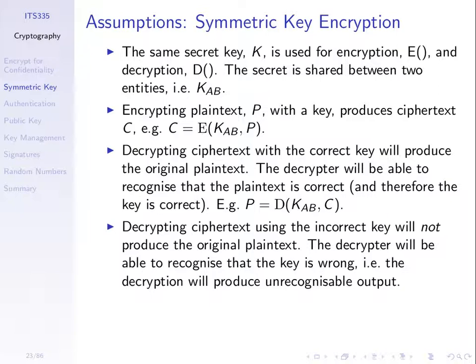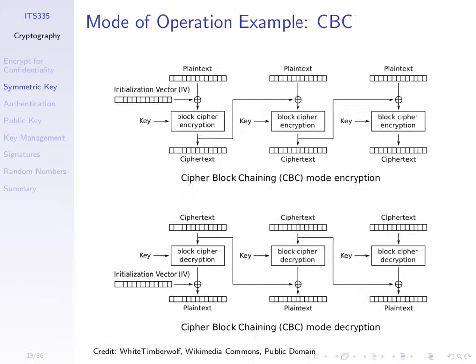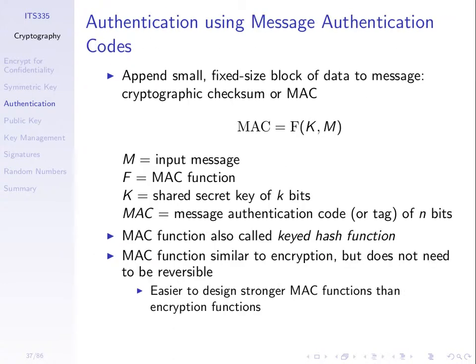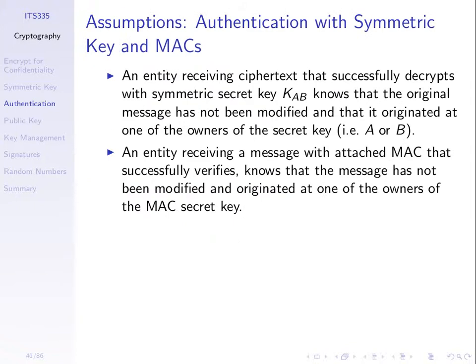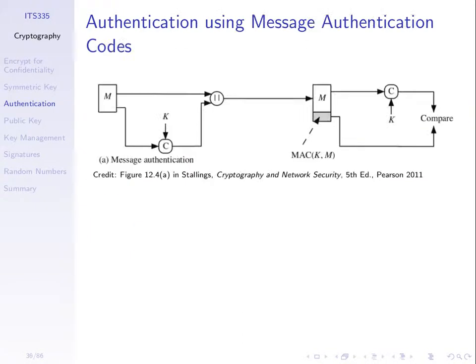One of these assumptions is stated here: decrypting with the wrong key will not produce the original plaintext, and the decryptor will be able to recognise that that key is wrong. It's captured in these assumptions — if we receive ciphertext that successfully decrypts, then we know it has not been modified. If it doesn't successfully decrypt, we assume it is the wrong key or the wrong ciphertext.